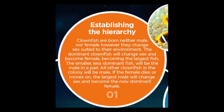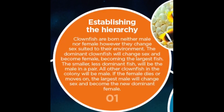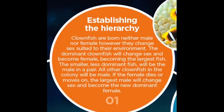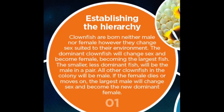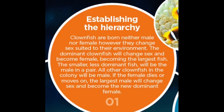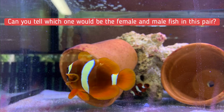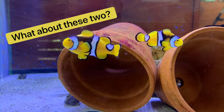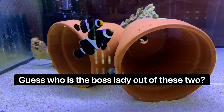Stage one is all about establishing the hierarchy. Clownfish are actually born neither male nor female. What happens is that the largest and most dominant fish in that little colony ends up being the big boss female — the one that lays eggs. The next one in line is the male that gets to breed with the female, and all the rest are males down the hierarchy. If a female dies or moves on, the largest male will actually change sex and become the new dominant female.